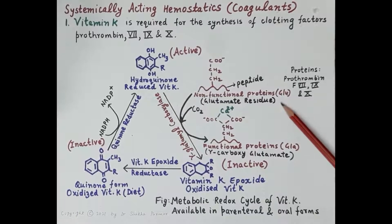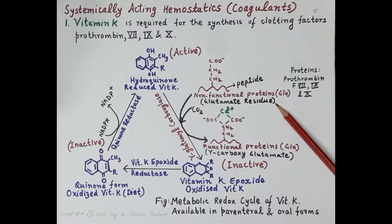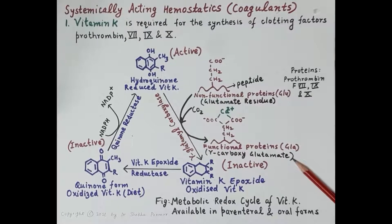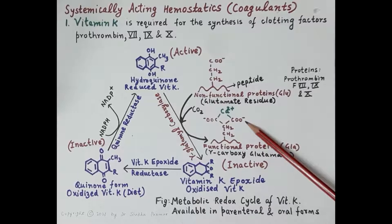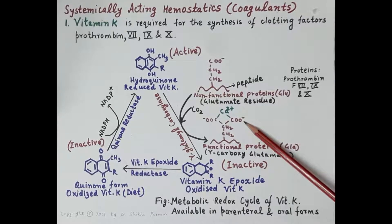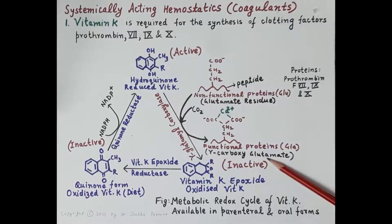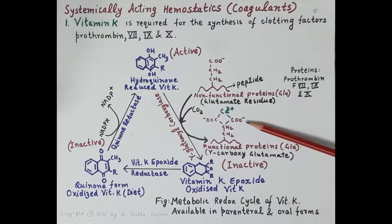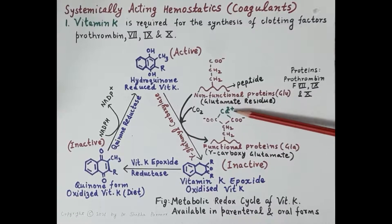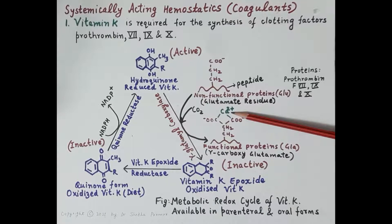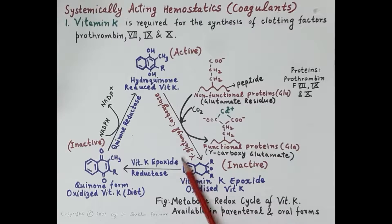During synthesis in the liver, in the last stage, these clotting factor proteins with a glutamate residue are carboxylated to gamma-carboxy glutamate, resulting in the addition of one more carboxylic group. This makes clotting factors 2, 7, 9, and 10 functional. Due to the presence of two carboxylic groups, they bind with calcium, which further binds with negatively charged platelets — essential for platelet plug formation and coagulation.